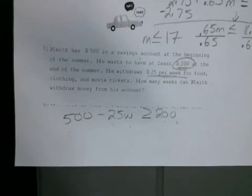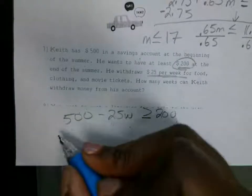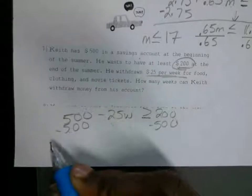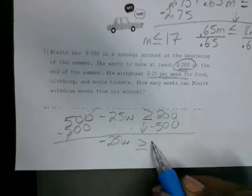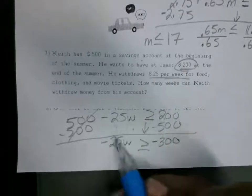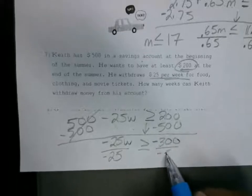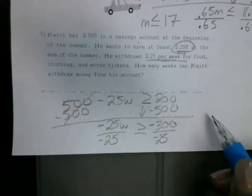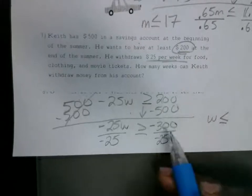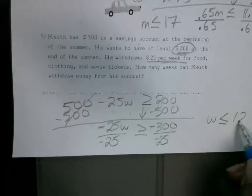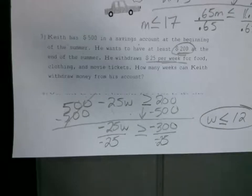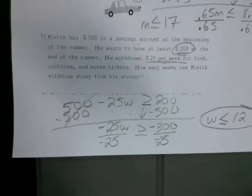What do I do to get my answer? Subtract 500 from both sides — that gives negative 25W greater than or equal to negative 300. Now divide both sides by negative 25. Dividing by a negative flips the inequality, so it goes the other way. A negative divided by a negative is a positive. What's 300 divided by 25? You've got to be able to write these as an inequality, because the test may just ask for the inequality and not even want the numerical answer.